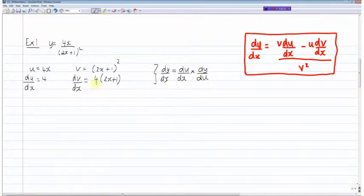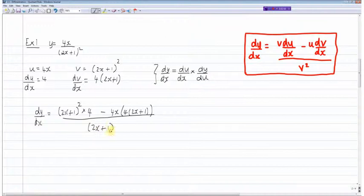So the quotient rule states dy/dx is equal to v which is equal to 2x plus 1 all squared multiplied by du/dx which is 4 minus u which is 4x multiplied by dv/dx which is equal to 4 times 2x plus 1 close brackets and this whole thing divided by v squared which is 2x plus 1 to the power of 4.